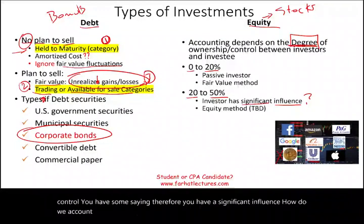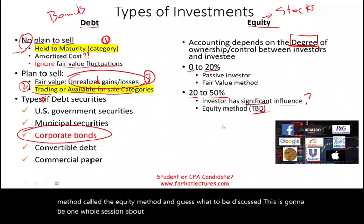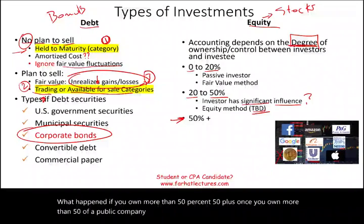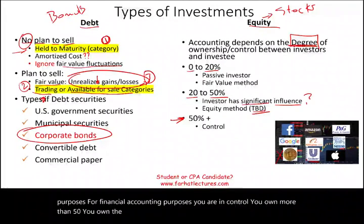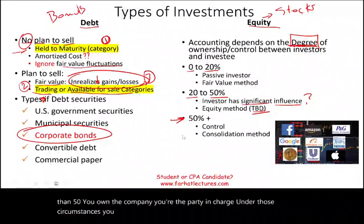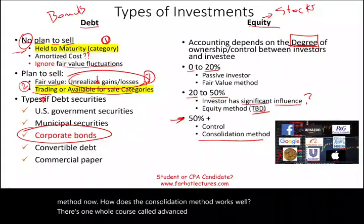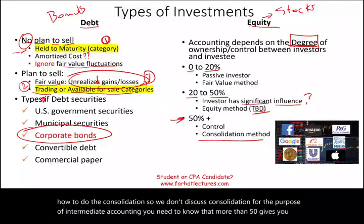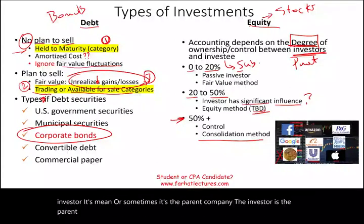When you have significant influence — owning 20% to 50% — we account for these investments under the equity method, and there will be a whole session dedicated to it. What happens if you own more than 50%? For financial accounting purposes, you are in control — you own the company. Under those circumstances, you have to consolidate using the consolidation method. There's an entire course called advanced accounting for consolidation. The investor is the parent company and the investee is the subsidiary, which becomes part of the parent company's overall financial statements.